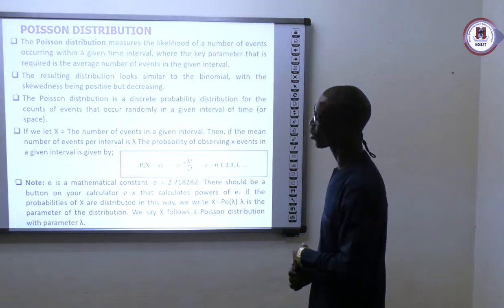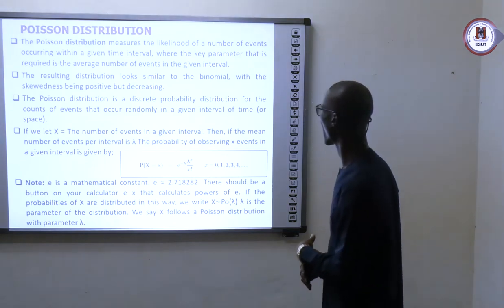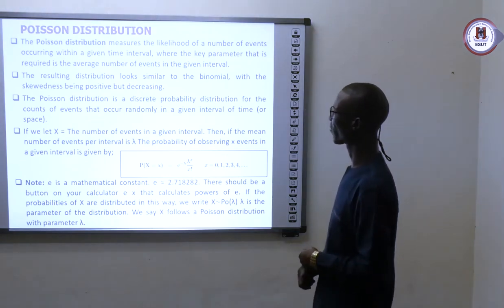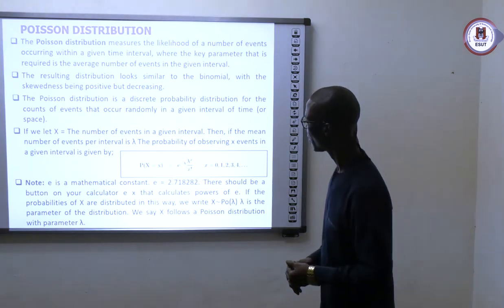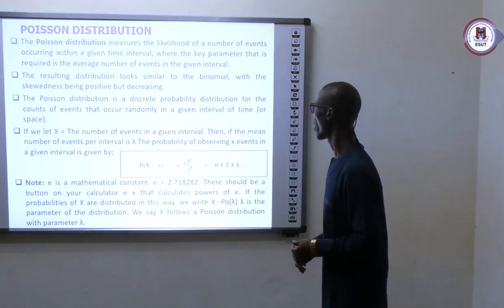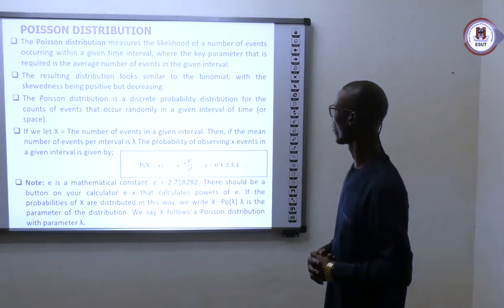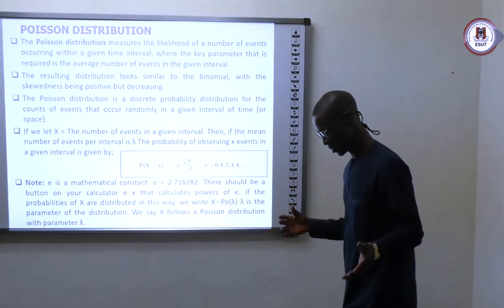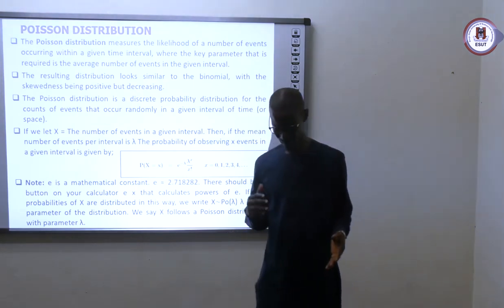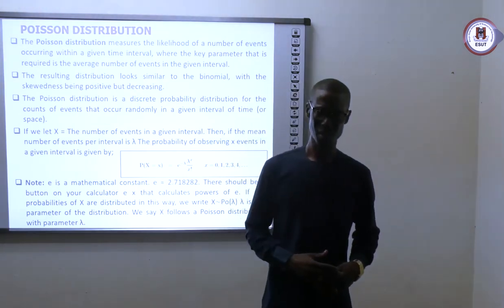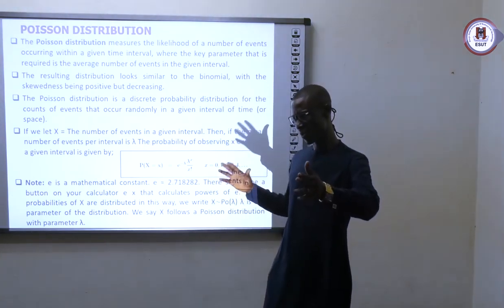Now we will look at Poisson distribution. The Poisson distribution measures the likelihood of a number of events occurring within a given time interval. The key parameter required is the average number of events in a given interval. So Poisson looks at what is the probability that this event will occur within this specific period.